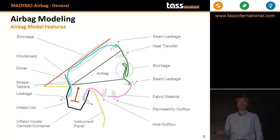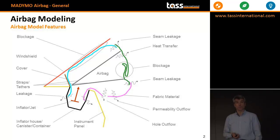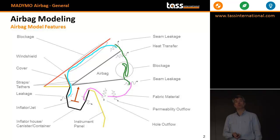If there is no contact you have free outflow. The windshield — well, that's obvious. The cover is the part of the instrument panel that opens, so this is where the airbag is located behind if it's not deployed. Straps are tethers, and that requires a bit more explanation. We call straps if there are line elements within MIMO; tethers means really membrane elements. Those straps or tethers are used to control the shape of the airbag in the deployed state.